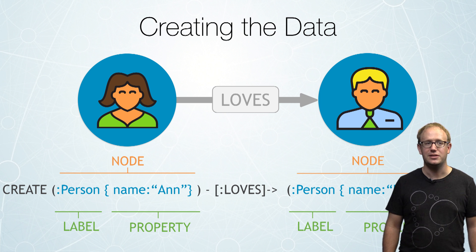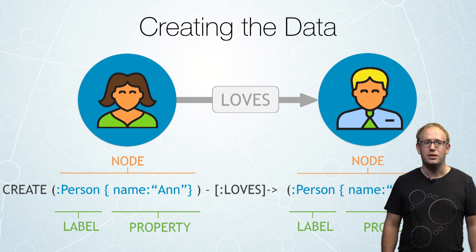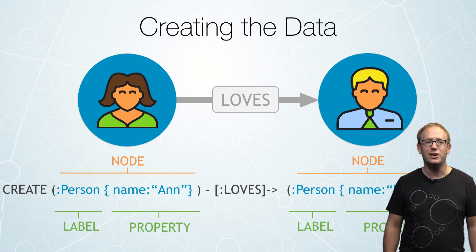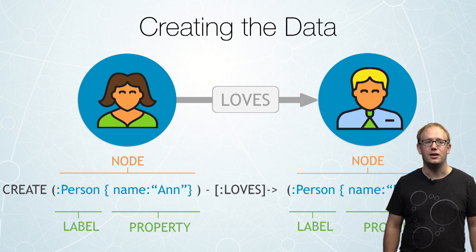In this case, name is Ann. And then we say that that node loves another node — a person whose name is Dan. It's very simple to create this in one single line of Cypher.